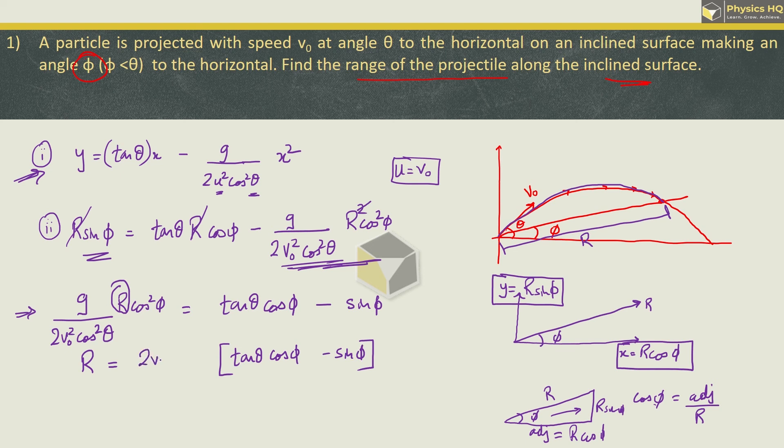So denominator will be in numerator. So we will have 2 v0 square cos square theta divided by g cos square phi.